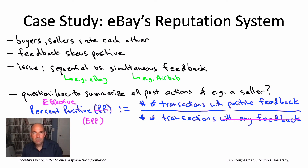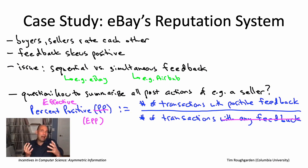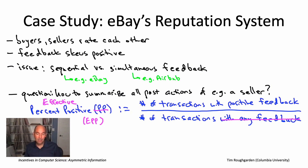That wraps up this third module, where we discussed various forms of asymmetric information and the market failures they can cause, including adverse selection and moral hazard — showing how these appear in traditional marketplaces like health insurance and labor, as well as technology platforms like online marketplaces. We can now recognize reputation systems as tools designed to mitigate asymmetric information problems by exposing information about product quality and participant behavior.